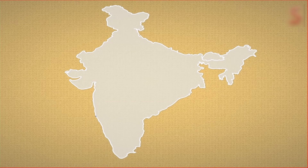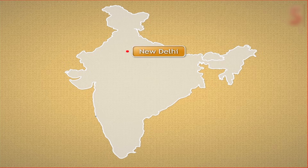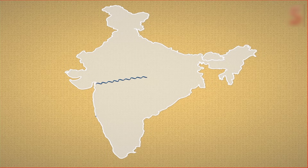Students, suppose you are asked to mark Delhi on the map of India — what would you do? To mark a place on a map, for example New Delhi on India's map, a point is marked and labelled as New Delhi. A wave-like line is drawn to point the location of a river on the map.